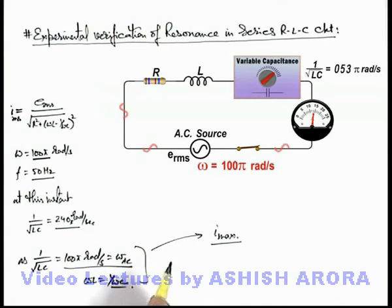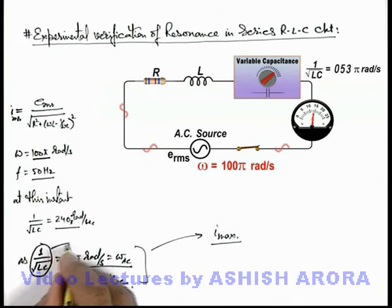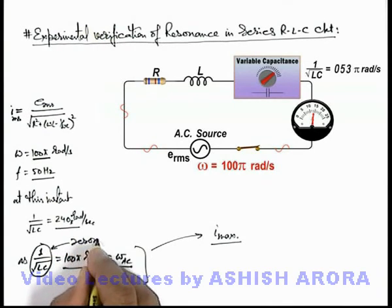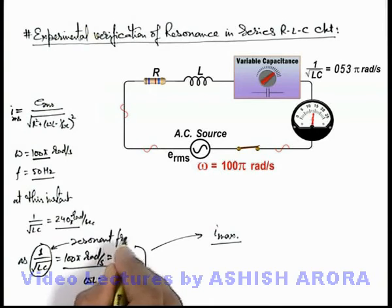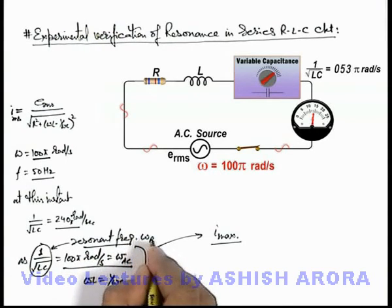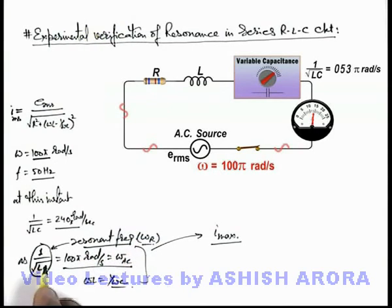So the maximum value in current we can record only when the frequency of alternating current matches with the value 1 by root LC. And this is the frequency which we call resonant frequency. Resonant frequency is the frequency which is denoted by ω_r, and this is the frequency at which the circuit is at resonance.